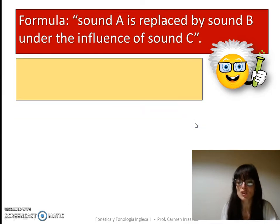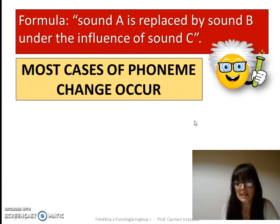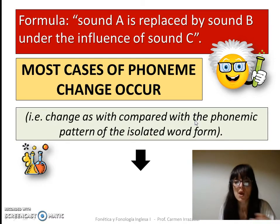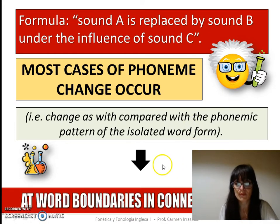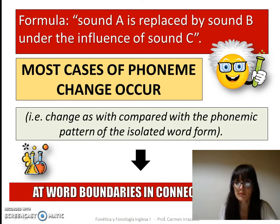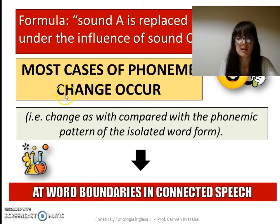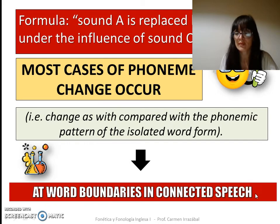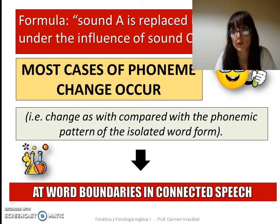This kind of assimilation has to do with the replacement of phonemes, and this kind of replacement takes place at word boundaries — that is, when words are put together in context. These cases of phoneme change happen at word boundaries in connected speech, though it's important to note that they may also take place inside words.